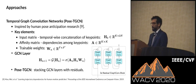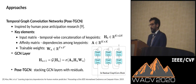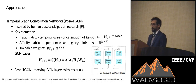Our pose-temporal graph convolution network model is inspired by human pose estimation research. We calculate key points of N frames as a K-by-2N matrix. A graph convolution network layer then captures the spatial-temporal information using a dense matrix A and trainable weights W. Our pose-graph convolution network is constructed by stacking multiple layers with residual connections. Finally, a max-pooling operation over the temporal dimension is applied to acquire the most salient features.